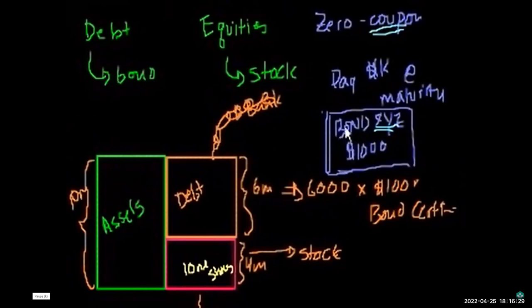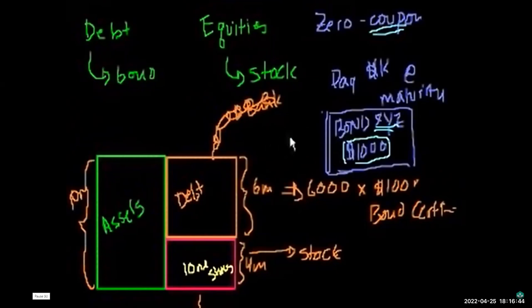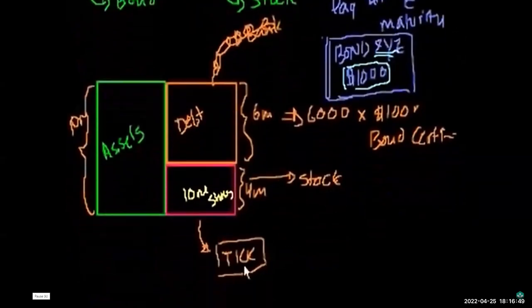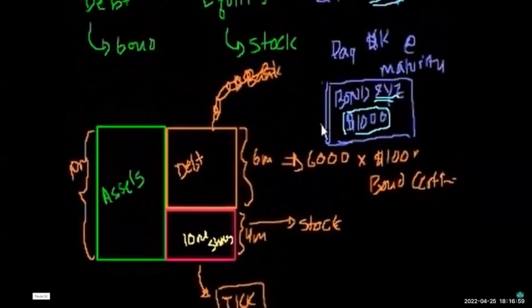A coupon is a regular payment the company makes on the bond. To figure out the real interest rate, you'd consider the coupon, what you gave them, what they pay you back, and when. For example, a 6% coupon means twice a year they give you 3% of the bond's value. Both stocks and bonds are traded — stocks on an exchange, bonds typically requiring a Bloomberg terminal, as bond quotes aren't as easily available as stock quotes.